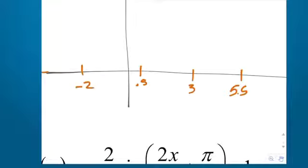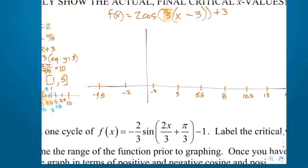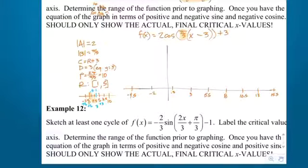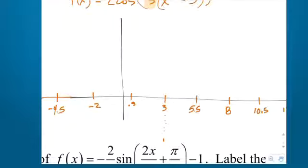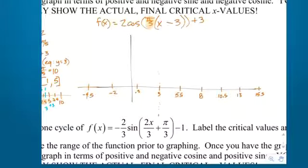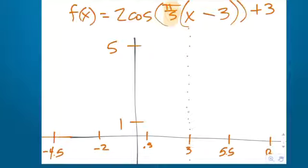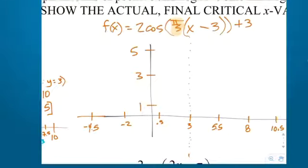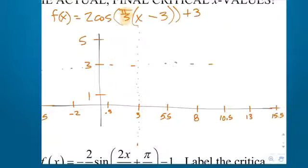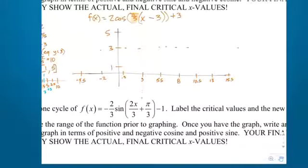The y-axis markings: lower bound is 1, upper bound is 5, midpoint is 3 — that's your sinusoidal axis. Draw the dotted line through. Make sure you have at least 9 critical values: 1, 2, 3, 4, 5, 6, 7, 8, 9 — exactly 9. Do you have at least one negative critical value? Yes, two of them.